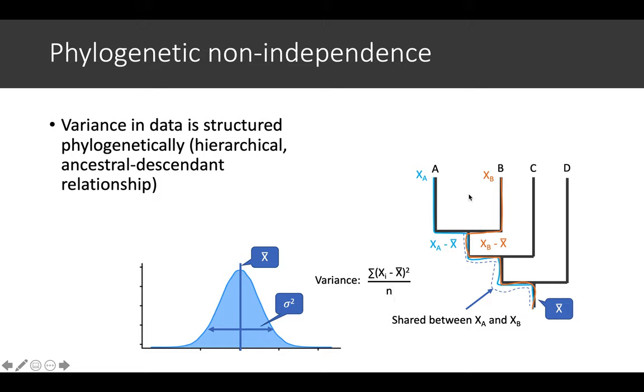In phylogenetic terms, the mean of that sample is the root estimate. So the phylogenetically corrected mean is the root estimate. If you think about it this way, the mean x-bar is actually the root estimate.